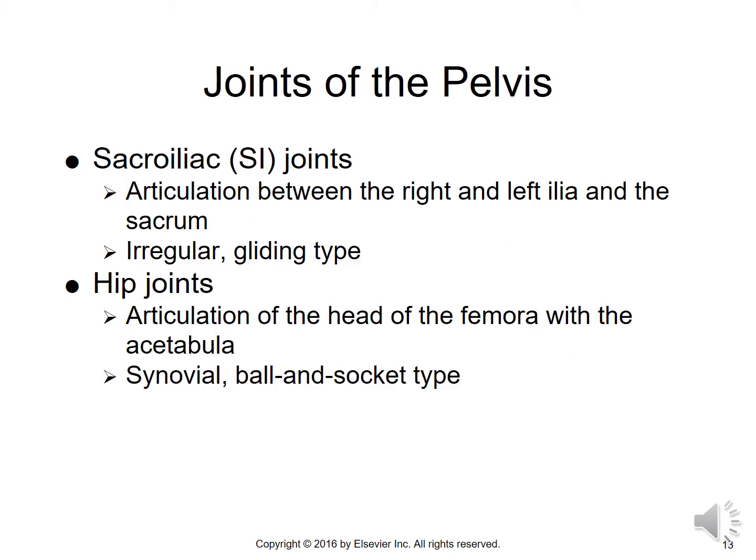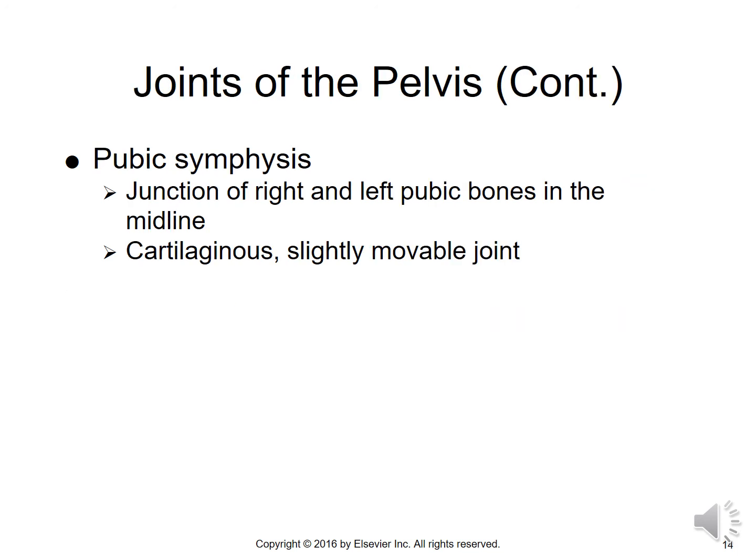For the joints of the pelvis: the SI joints, or sacroiliac joints, are the articulations on each side between the right and left ilia and the sacrum — these are irregular gliding types of joints. The hip joints are the articulation of the heads of the femora with the acetabula, and are synovial ball-and-socket type joints. The pubic symphysis is the junction of both the right and left pubic bones in the midline anteriorly. It is a cartilaginous, slightly movable joint that becomes important in childbirth when it must stretch to accommodate the head of the fetus passing through the birth canal.